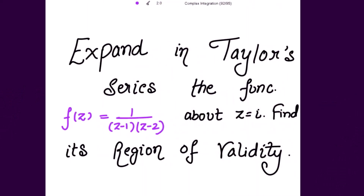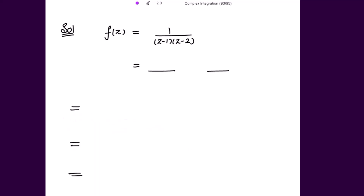Expand in Taylor series the function f(z) = 1 / [(z-1)(z-2)] about the point z equal to iota, and we also have to find its region of validity. So the solution is: